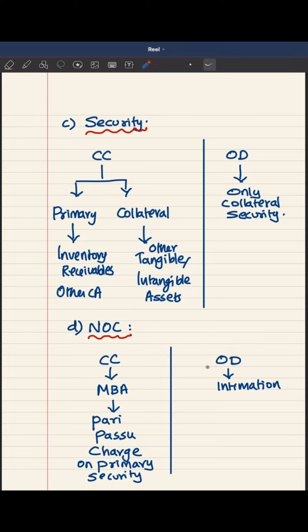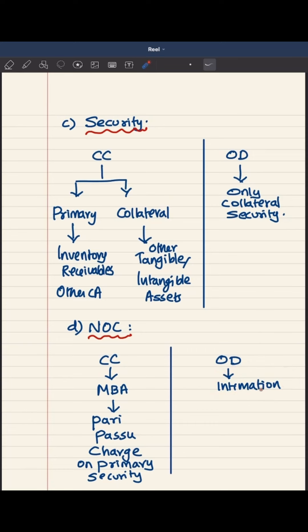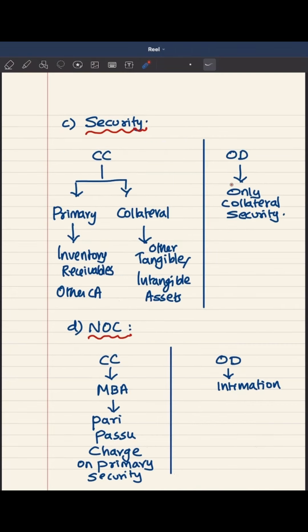That may not be the case with overdraft. If an entity has already availed overdraft on the basis of collateral security and now avails an additional overdraft facility with a different bank against a different asset, then no NOC is required — just an intimation to the existing bankers is sufficient, because no permission or seeding of charge is required. These are all the broad differences between cash credit and overdraft facility.